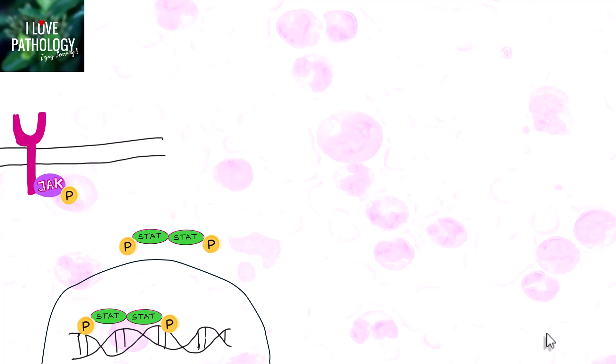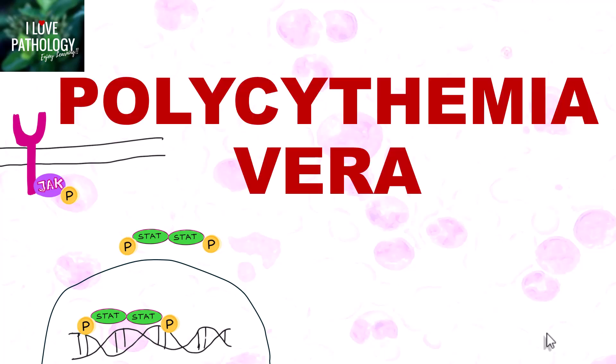Hi, everyone. Welcome back to this short tutorial from Pathology Made Simple at ILovePathology.com. In continuation with the diseases of hematopoietic system or hematopathology, we have been discussing about myeloproliferative neoplasms. In my earlier session, I had discussed in detail about chronic myeloid leukemia. And today, let us talk about a very important topic in hematopathology, another myeloproliferative neoplasm, which is polycythemia vera.